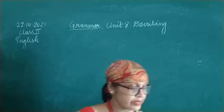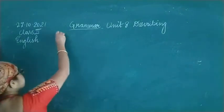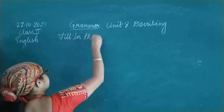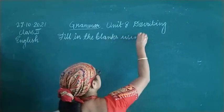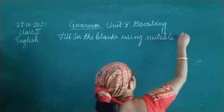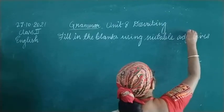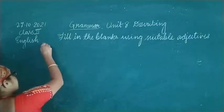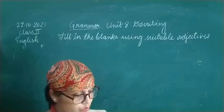So let us start. Exercise 5 is: fill in the blanks with suitable adjectives. In this exercise the choices are given in brackets, so you have to choose the correct one.